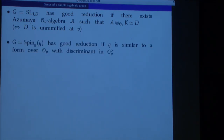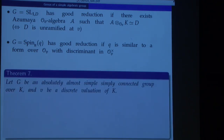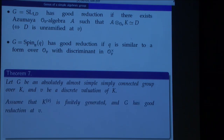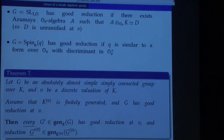When we talk about spinor groups, a spinor group has good reduction if after scaling the form q you want the form to be defined over the valuation ring. The main result is the following: suppose we have an absolutely almost simple group and a discrete valuation of k with finitely generated residue field, and assume G itself has good reduction at V. Then every single group in the genus also has good reduction at this V. Furthermore, the groups obtained after reduction will also have the same tori.